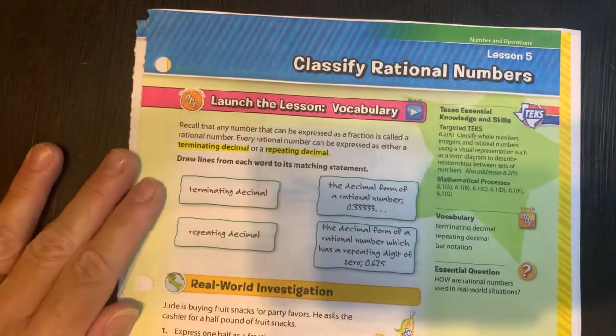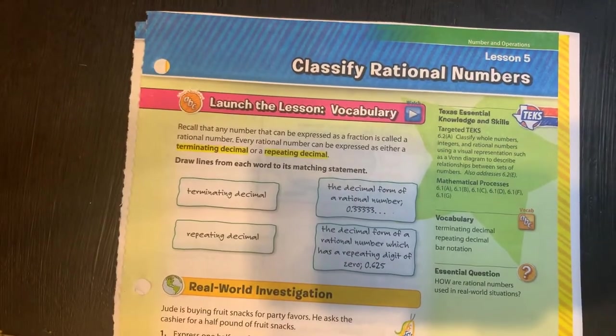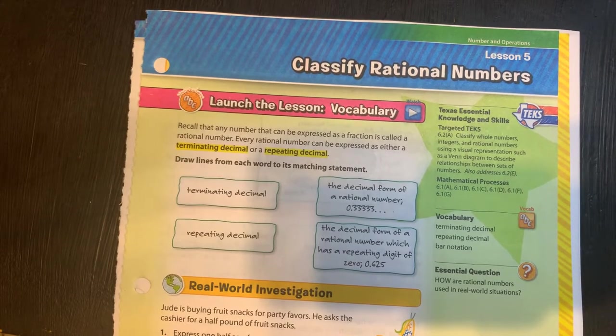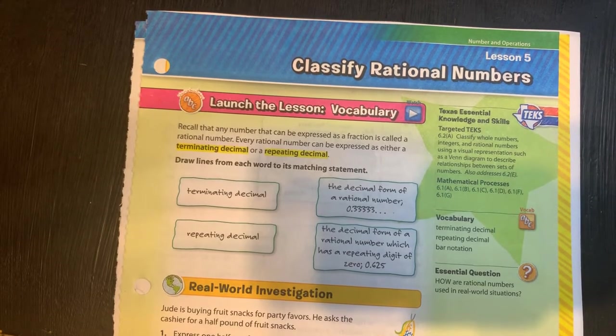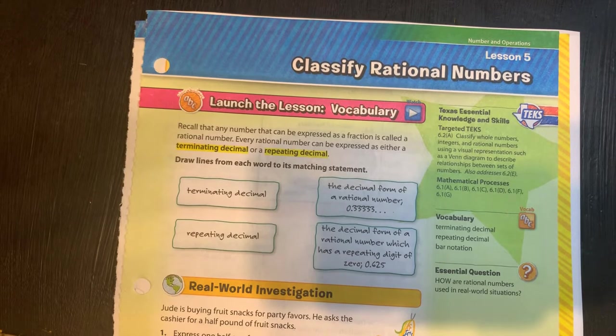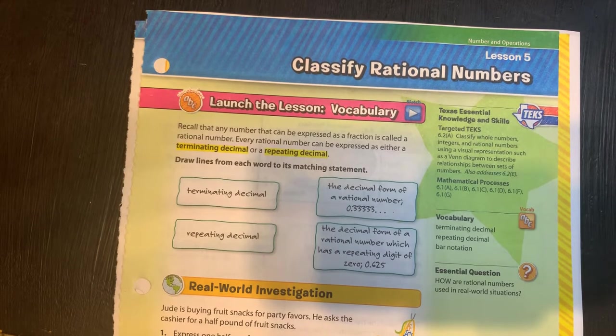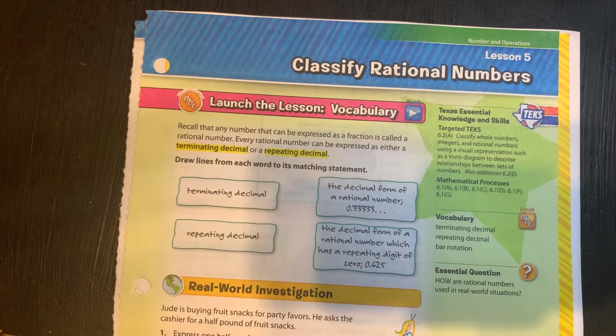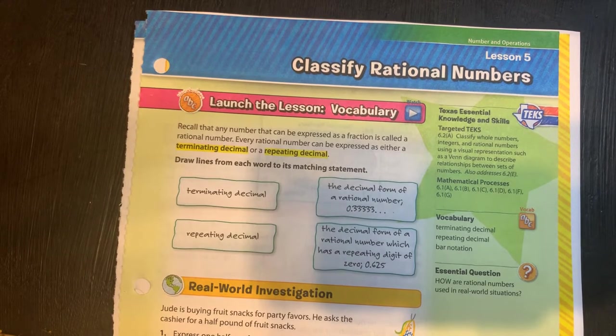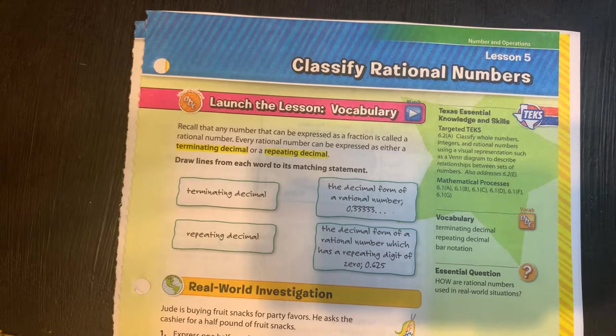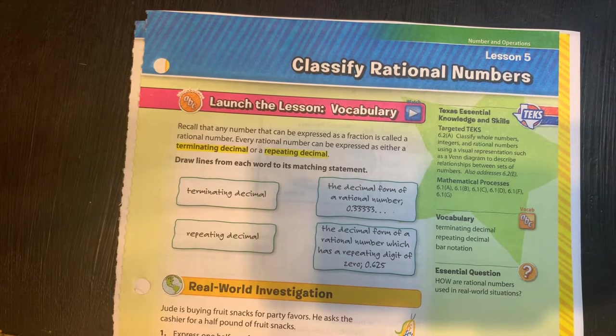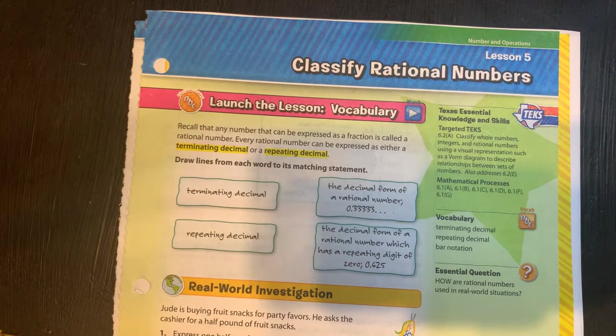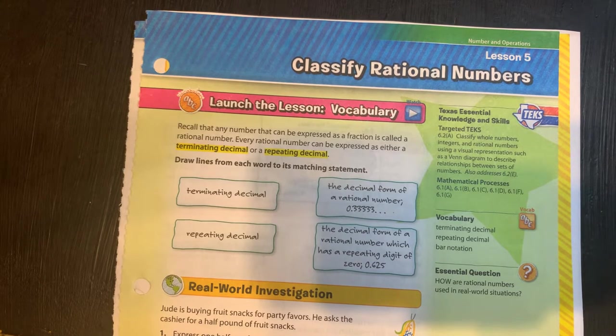Hey guys, today we're going to look at classifying rational numbers. This is lesson 5 and the notes are going to start on page 69. The first thing that we want to look at is that any number that can be expressed as a fraction is called a rational number. A rational number can be expressed as a terminating decimal or a repeating decimal.